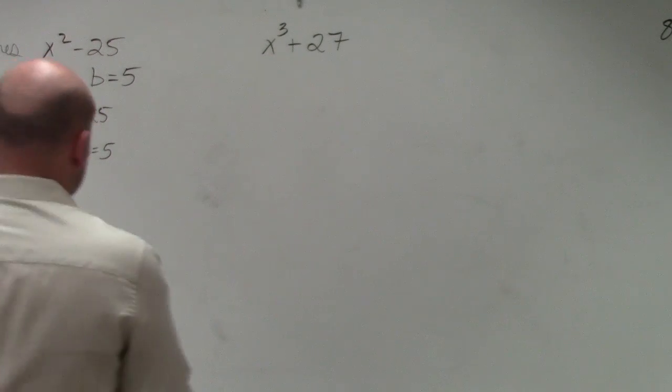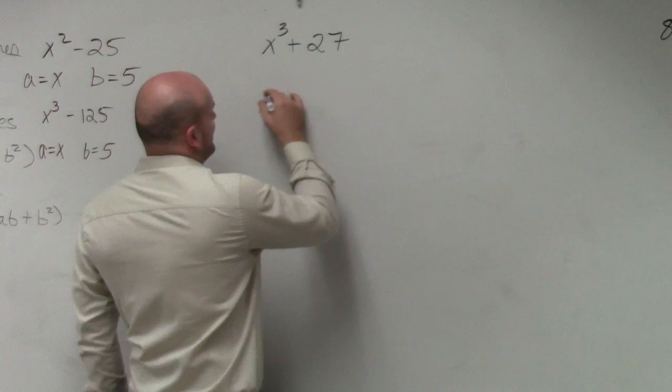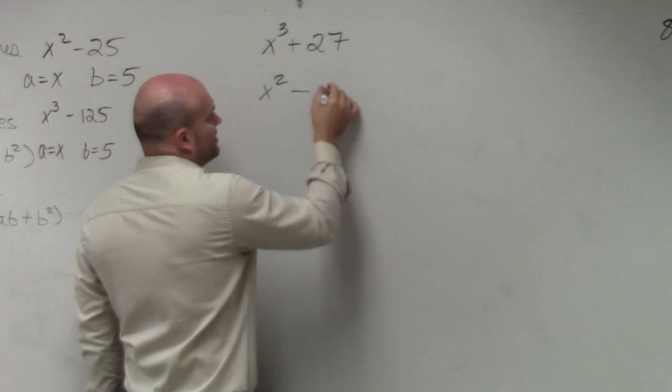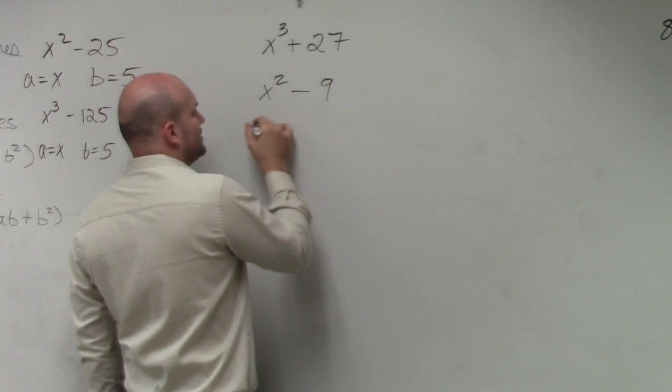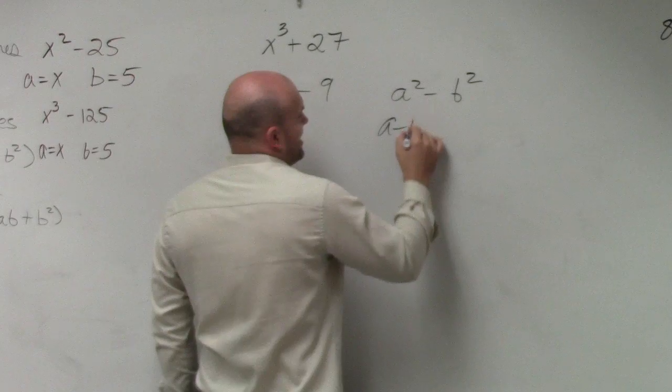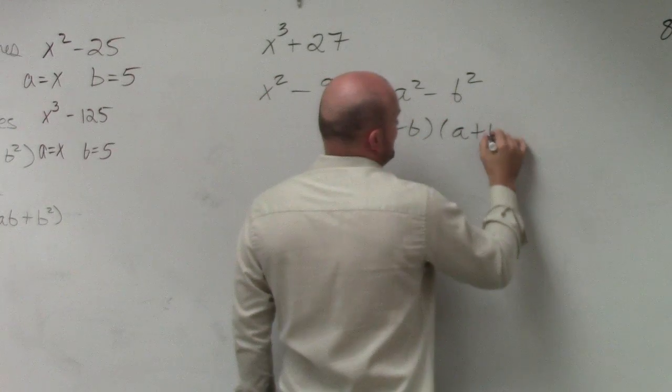Ladies and gentlemen, I want to relate difference of two squares to difference of two cubes. So if I had x squared minus 9, you guys hopefully understand that whenever you have a squared minus b squared, that's a minus b times a plus b.